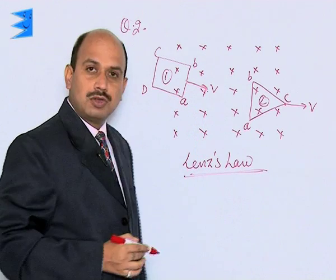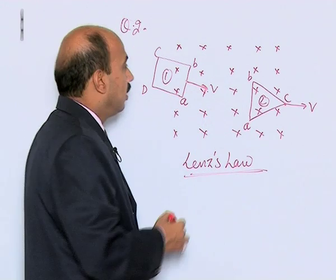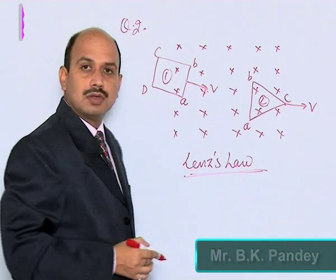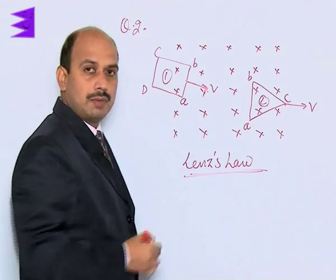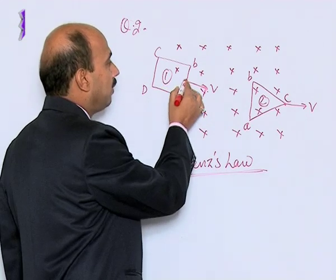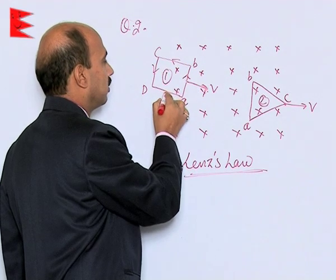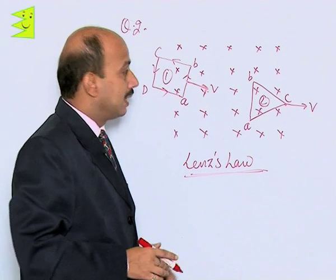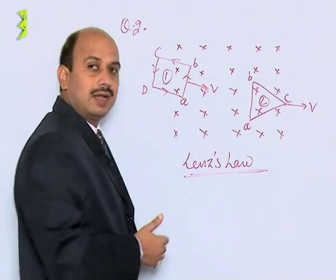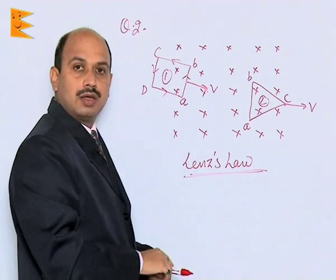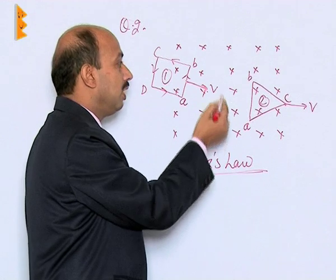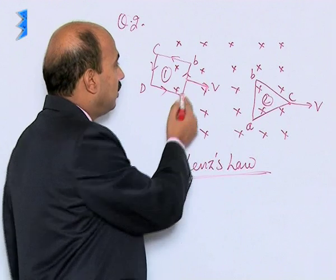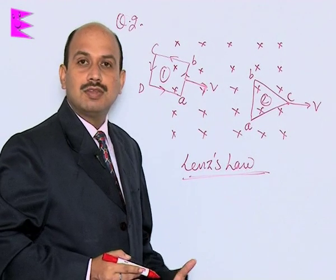Magnetic flux can be opposed here. An increase in magnetic flux can simply be opposed if the induced magnetic field is out of the plane of the paper — that is, outward to the plane of this board. So the direction of current for that should be anticlockwise. If the direction of current is anticlockwise in loop one, then the magnetic field due to induced current, by using the right-hand thumb rule, will be outward, while the magnetic field already present is into the plane — inward. Because of this induced current, the increase in magnetic flux is opposed.